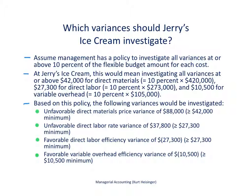Our company is Jerry's Ice Cream — an ice cream producer used throughout this chapter and the related videos. We'll assume management has a policy to investigate all variances at or above 10% of the flexible budget amount for each cost. That requires going back to the flexible budget from previous videos to determine, for each cost category, what 10% of the flexible budget amount is, and then identifying which variances meet or exceed that threshold.